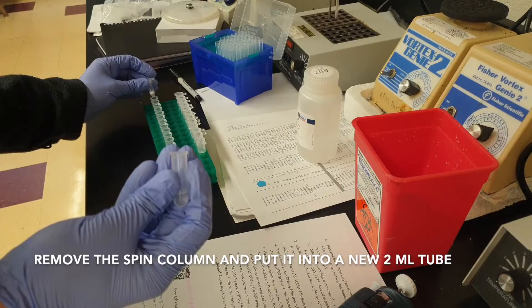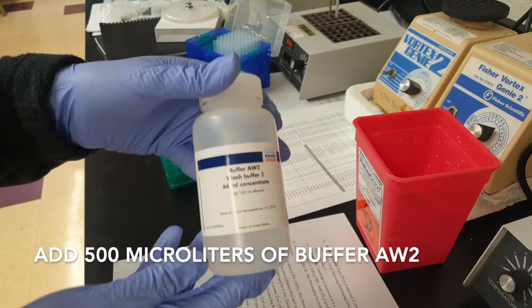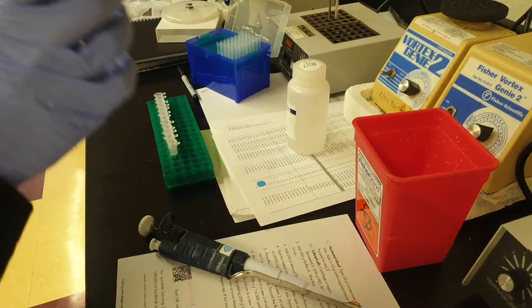Once that's done, discard the flow-through. Place the spin column into a new 2 ml tube and repeat pretty much the same process with buffer AW2.